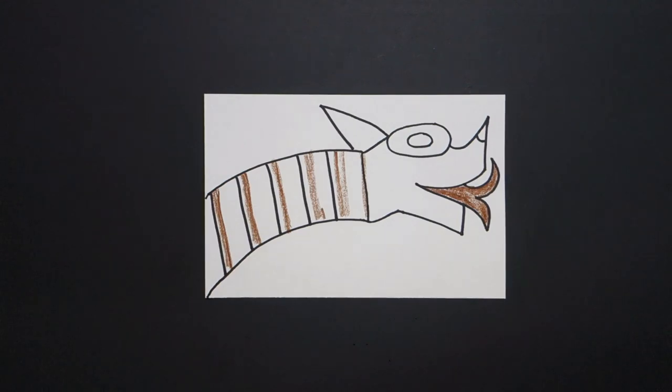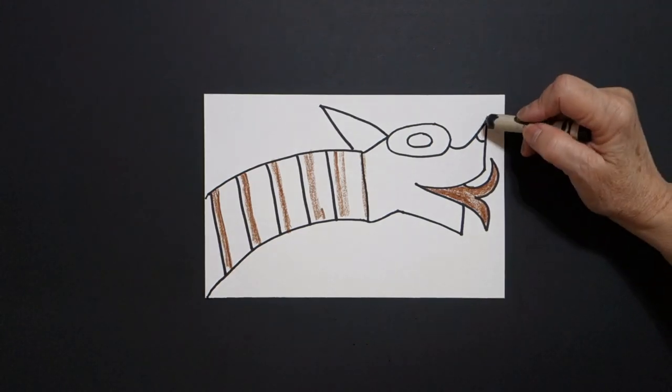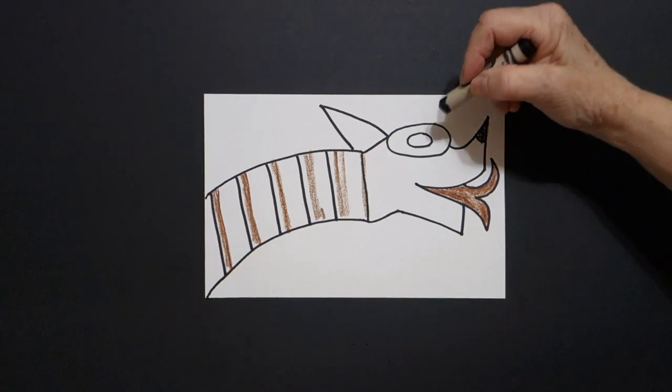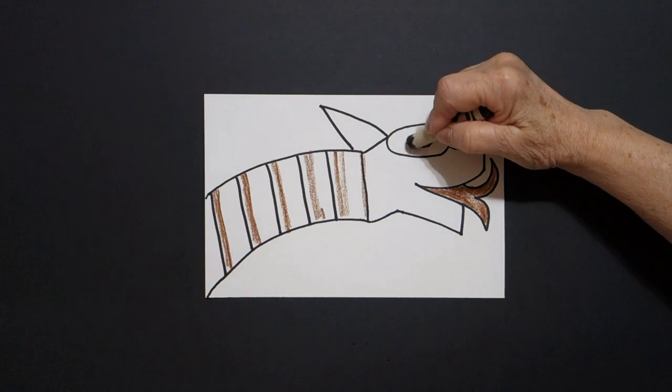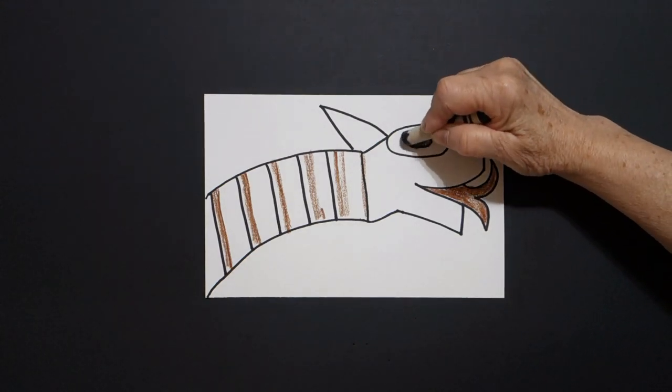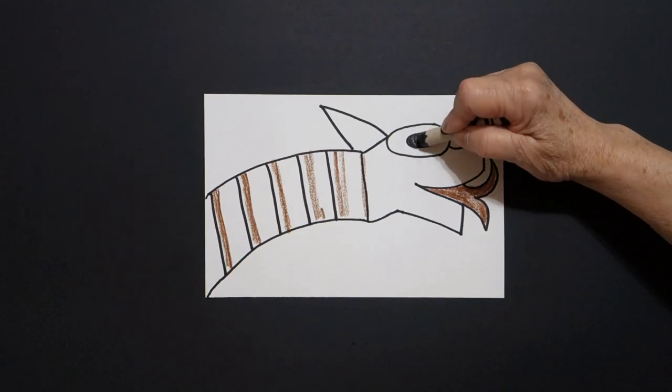All right, next I take my black and I'm going to color the tip of this space and I'm going to color my baby oval and I'm going to color these kind of black.